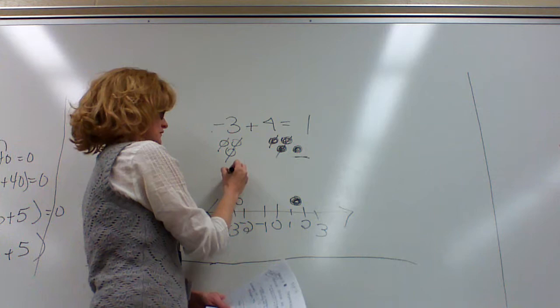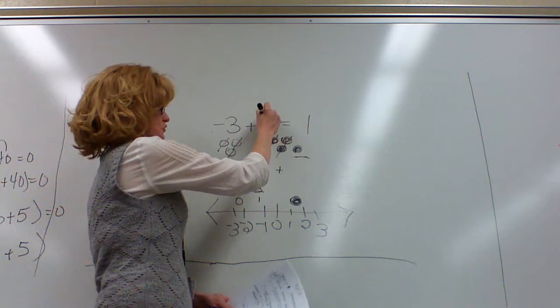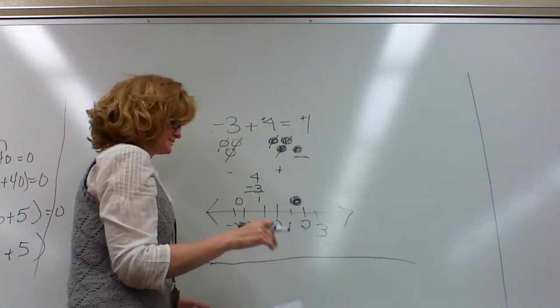Another way that you can look at this is that the signs are opposite. One of them is negative and one of them is positive. So you take the bigger number minus the smaller number, and you get left with one, and then you keep the sign of the bigger number. Because the 4 is positive, you keep it, so you'll keep a positive sign at the end.